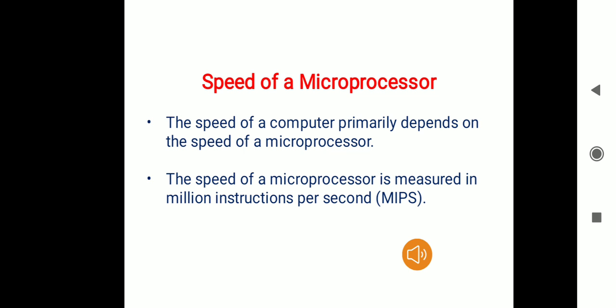The speed of a computer primarily depends on the speed of a microprocessor. That means if the speed of the microprocessor is high, the speed of the computer will also be high, or if the speed of the microprocessor is low, the speed of the computer will also be low. The speed of the microprocessor is measured in million instructions per second.